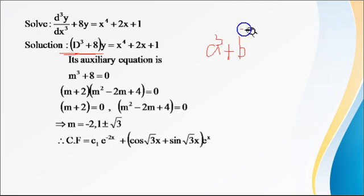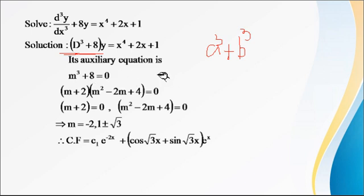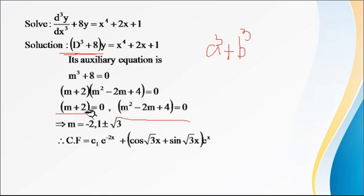We apply the sum of cubes formula: a³ + b³ = (a + b)(a² − ab + b²). Here a = m and b = 2 (since 8 = 2³), so we get (m + 2)(m² − 2m + 4) = 0. Setting each factor to zero: m + 2 = 0 gives m = −2. For the quadratic factor m² − 2m + 4 = 0, we apply the quadratic formula.